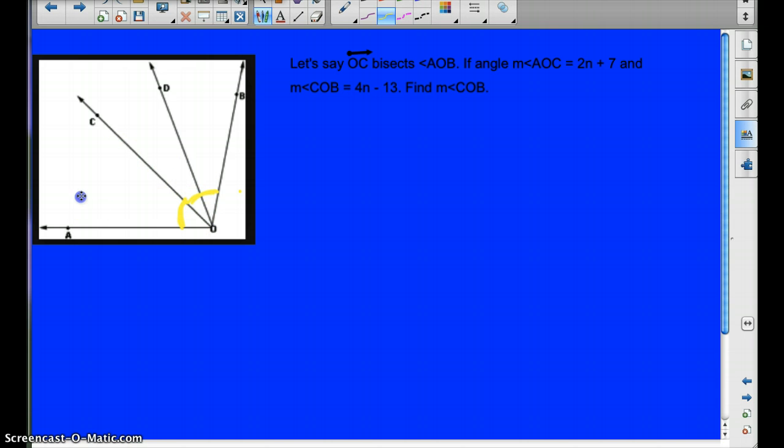And AOC is 2N plus 7. And COB is 4N minus 13. Right here. Okay. So we need to find what COB is. And so, how can we do that?